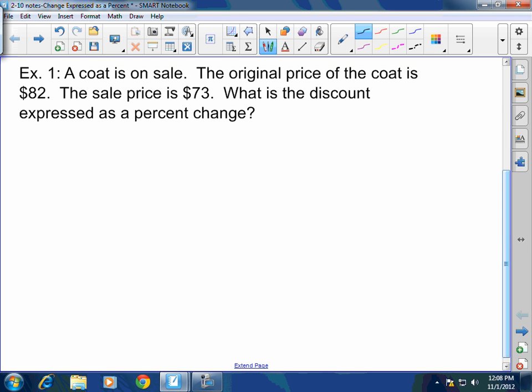Let's look at the first example. A coat is on sale. The original price of the coat is $82. The sale price is $73. What is the discount expressed as a percent change? Well, my percent change here is going to equal new value, which is 73, minus old value over old value times 100.